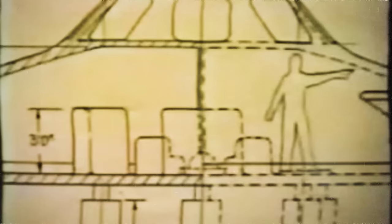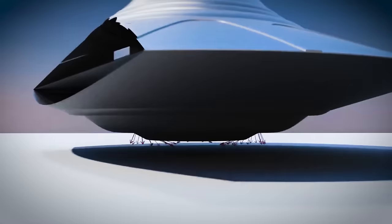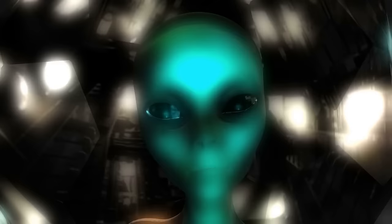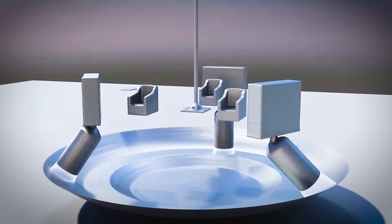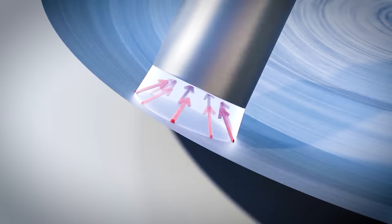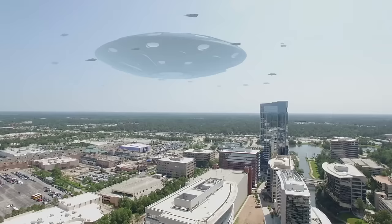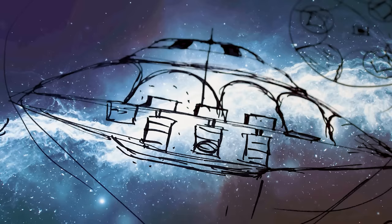Diving into Bob Lazar's account of the sport model UFO, he paints a picture of an alien craft that's as intriguing on the inside as it is on the outside. This isn't just a flying disc. It's a marvel of extraterrestrial architecture, cleverly divided into three levels, each with a distinct purpose. Starting at the bottom, the lower level of the craft is where all the magic happens. Here lies the heart of the UFO's propulsion system, equipped with three gravity amplifiers and their waveguides. These aren't your average engine parts. They're the components that supposedly allow the craft to bend gravity to its will, making it possible to zip across the cosmos with ease.